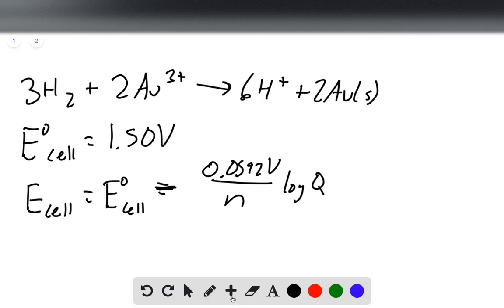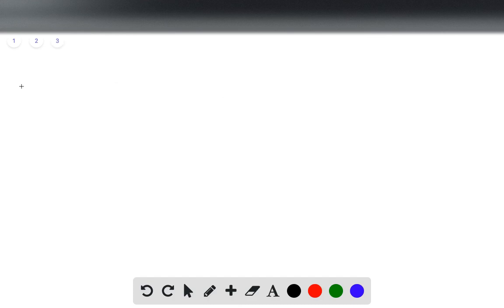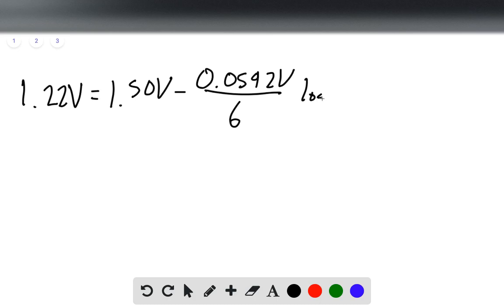I'll go to a new page here to start plugging in values. We're told our cell potential under non-standard conditions is 1.22 volts, and under standard conditions is 1.50. And then our 0.0592 volts. Our n is 6, since we have 6 electrons in this equation. And then our Q is concentration of H⁺ to the 6th over concentration of H2 to the 3rd times the concentration of Au³⁺ squared.